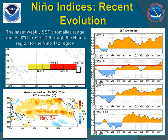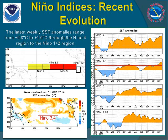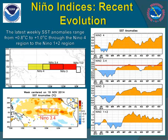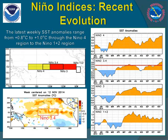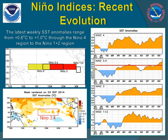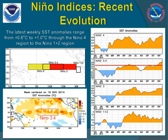Specifically, we look at sea surface temperature anomalies near the equator in the east central Pacific. In this key Nino 3.4 region, we need unusually warm water of at least 0.5 degrees Celsius above normal to persist for several consecutive months in order to effectively change the weather patterns downstream directed towards the United States.